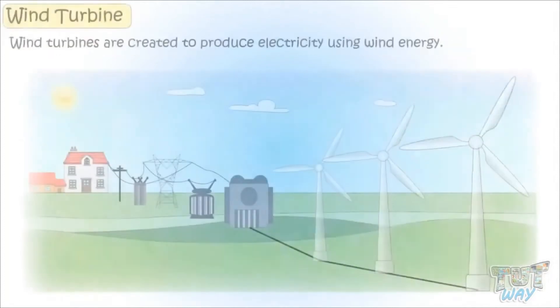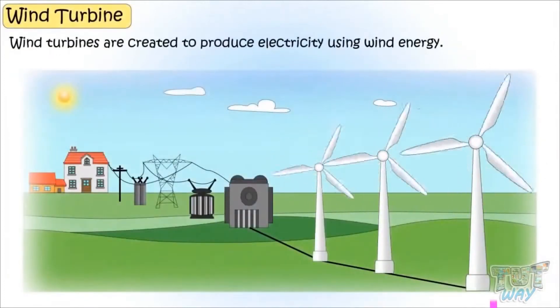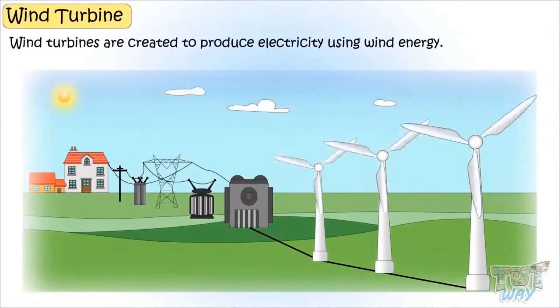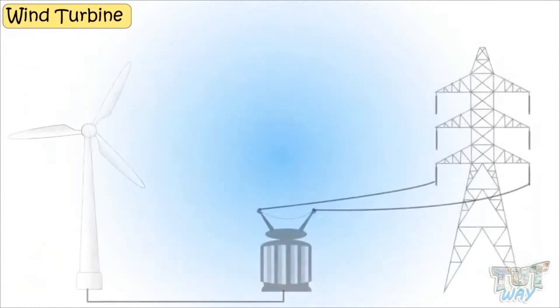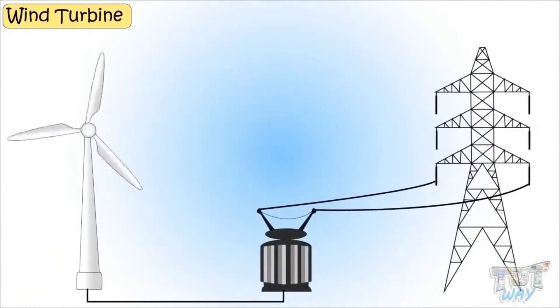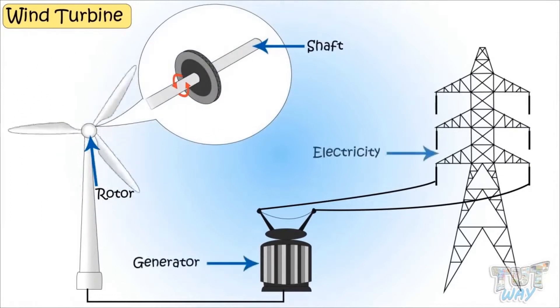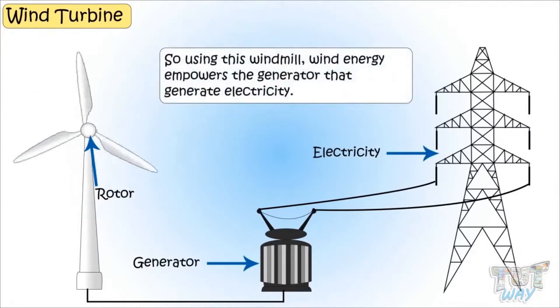Big wind turbines are created to produce electricity using this wind energy. Kinetic energy of moving air or the wind turns the blade around the rotor. And this rotor is attached to the main shaft, to the generator, that generates electricity. So by using this windmill, wind energy empowers the generator that generates electricity.